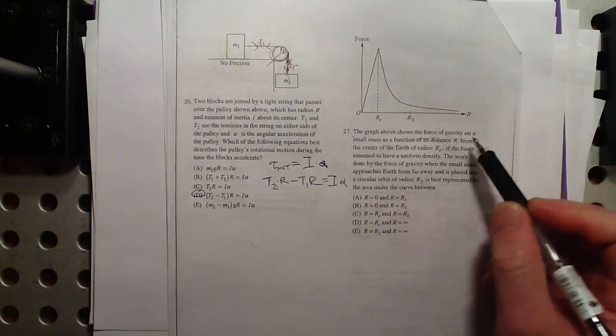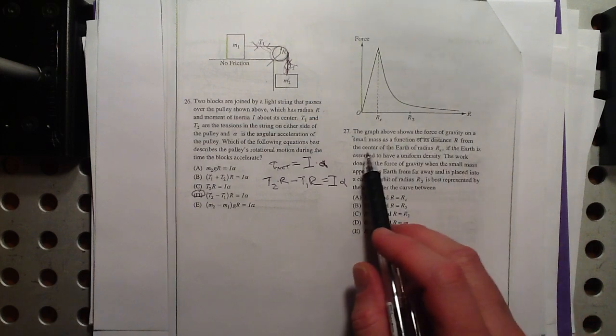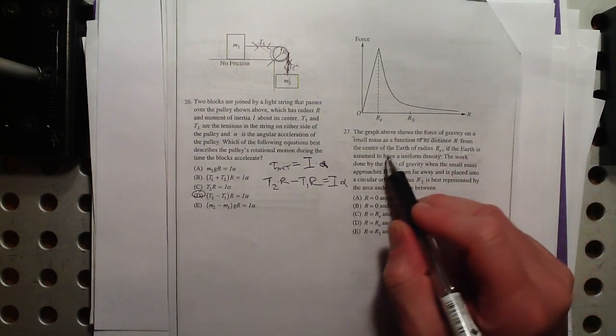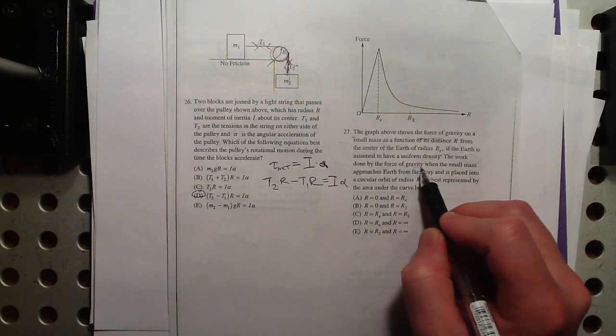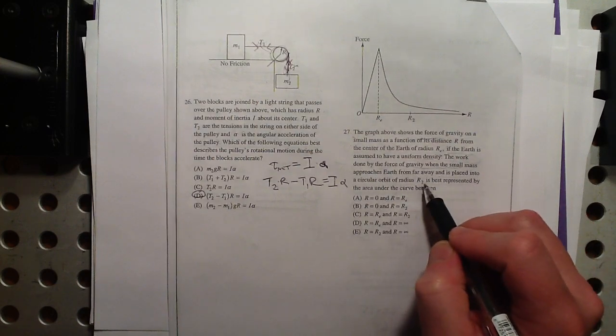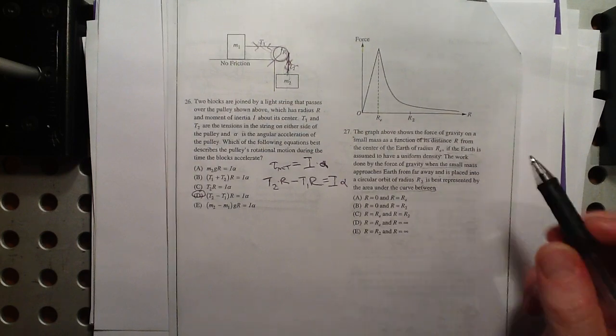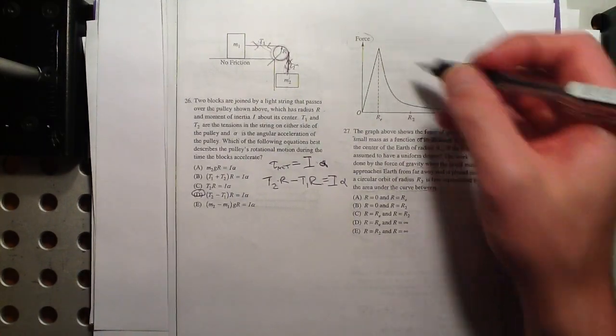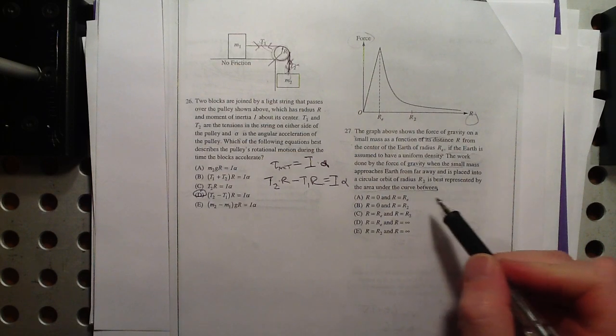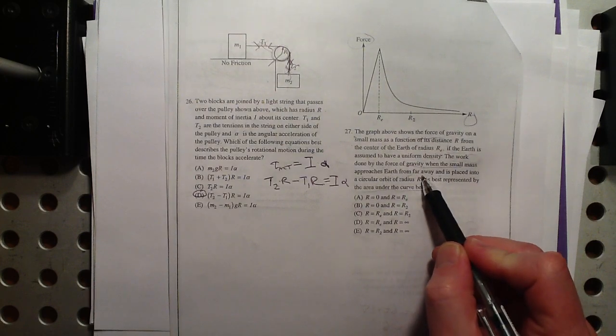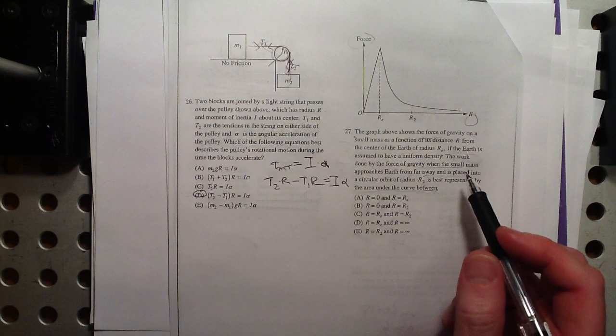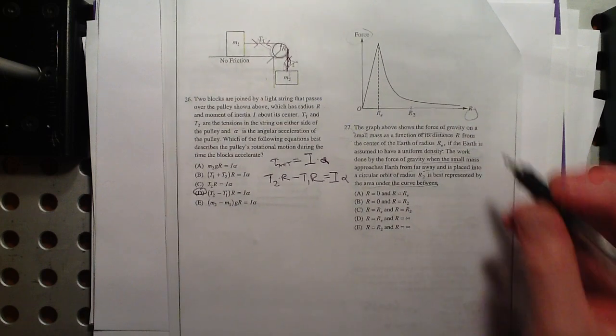27, the graph above shows the force of gravity on a small mass as a function of its distance r from the center of the Earth of radius r sub-Earth. If the Earth is assumed to have a uniform density, the work done by the gravitational force when the small mass approaches the Earth from far away and is placed into a circular orbit of radius r2, is best represented by the area under the curve between. Okay. So this is force and distance. So the area under this curve would, in fact, be work, right? Now they want to know from where to where if we're going from far away and placed into a circular orbit of r2.